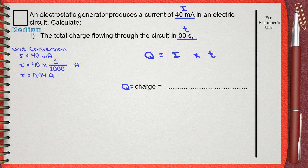Simply do your substitution. 0.04 times 30. This gives the final answer 1.2. And don't forget, the quantity of charges measured in the unit Coulombs. This is written as capital C letter.